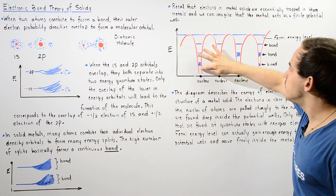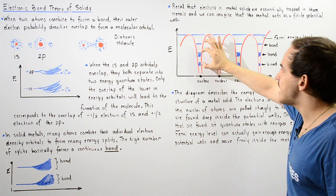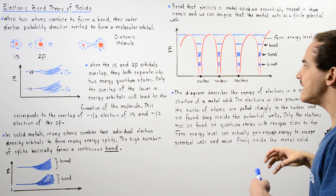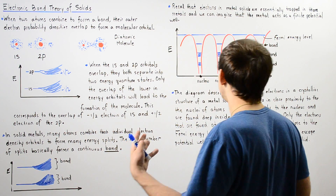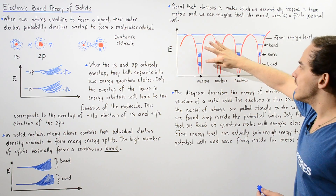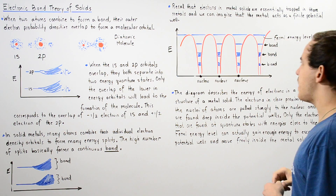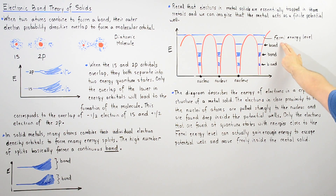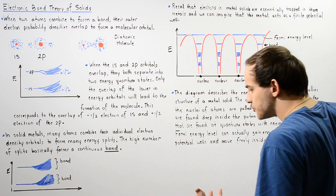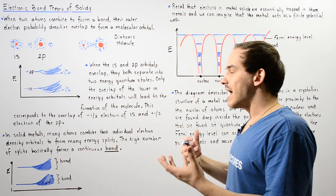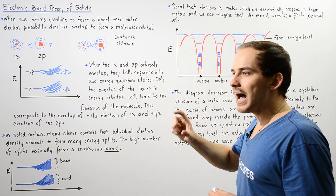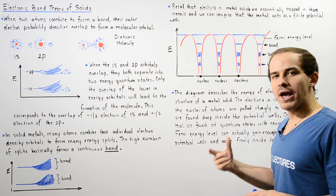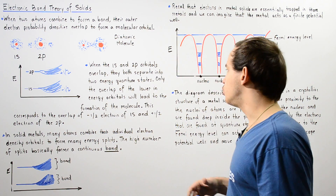The white regions between the blue bands are the energy gaps — regions representing quantum states in which electrons cannot actually be found. Our electrons can only exist within the blue band regions. The highest possible band region is given by the Fermi energy level. The Fermi energy inside a metal solid is basically the highest possible energy quantum state that an electron can occupy when the metal solid is at absolute zero.